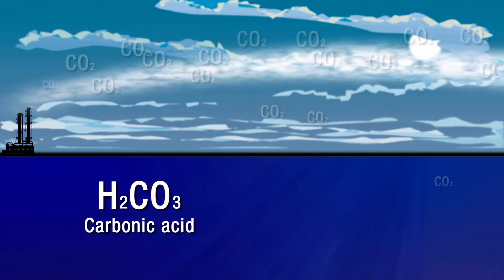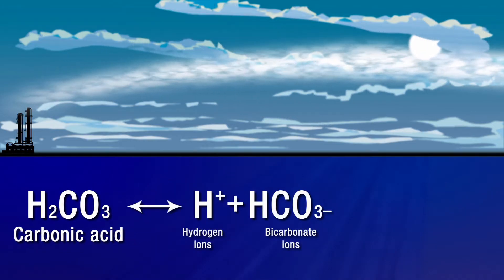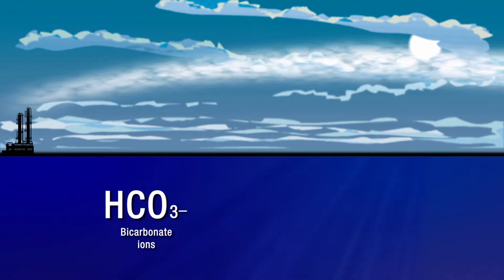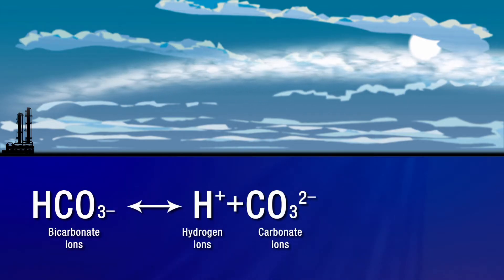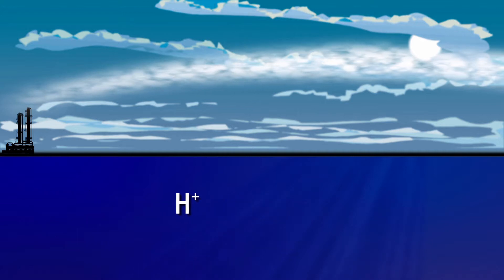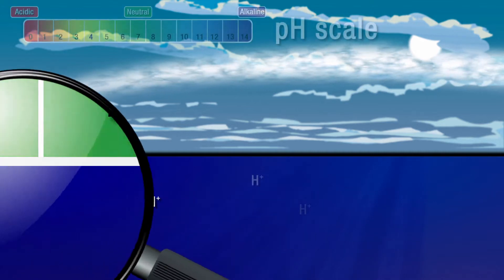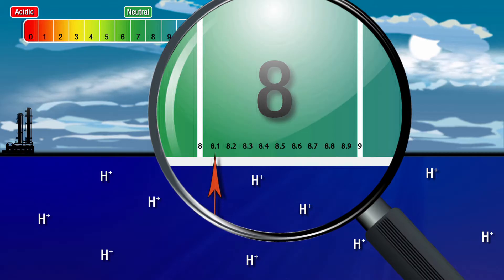Carbonic acid reacts further and forms hydrogen ions and bicarbonate ions. Bicarbonate ions also react to form hydrogen ions and carbonate ions. The free hydrogen ions in the ocean water increase the acidity of the water, or a decrease in its pH levels.